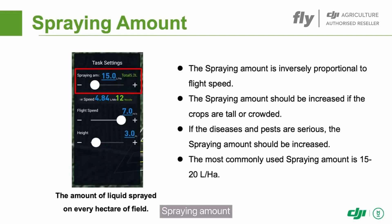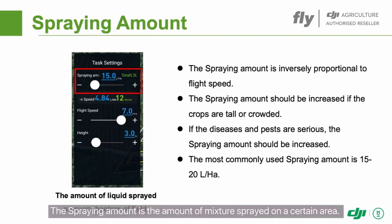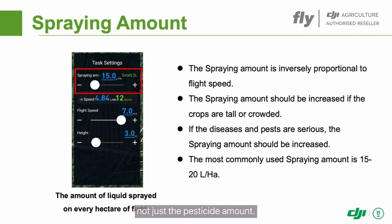Spraying amount. The spraying amount is the amount of mixture sprayed on a certain area. The amount here refers to the mixture of pesticide and water, not just the pesticide amount.